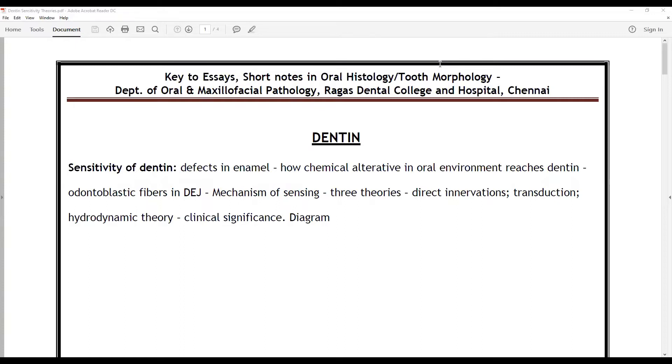For this, you need to discuss the three theories: the direct innervation theory, the transduction theory, and the hydrodynamic theory. You should explain how there are defects in enamel, how chemical alterations in the oral environment reach dentin, the role of odontoblastic fibers in the dentinal enamel junction, how they contribute to the mechanism of sensing explained by the three theories.